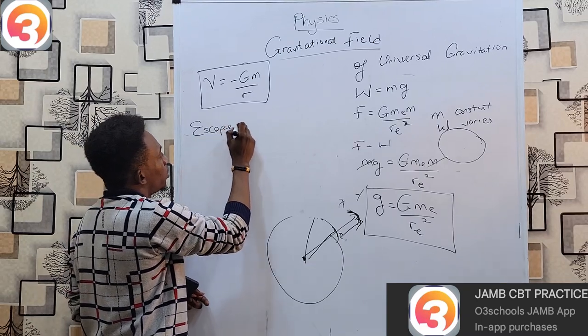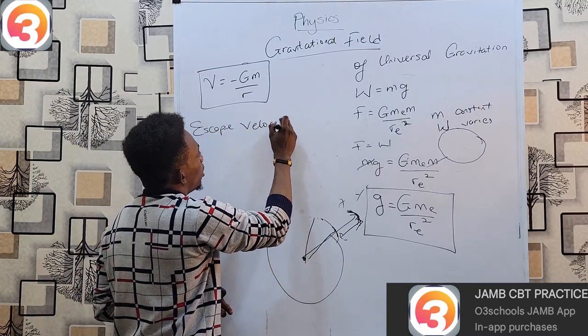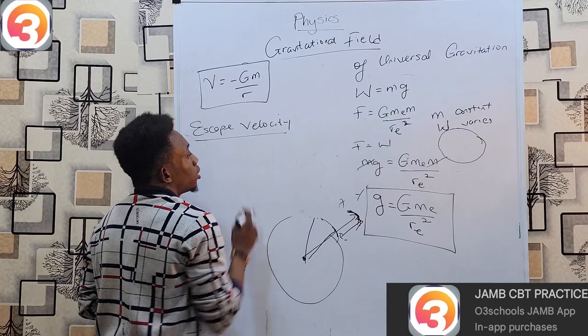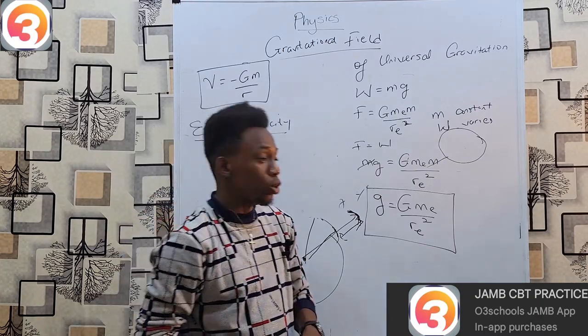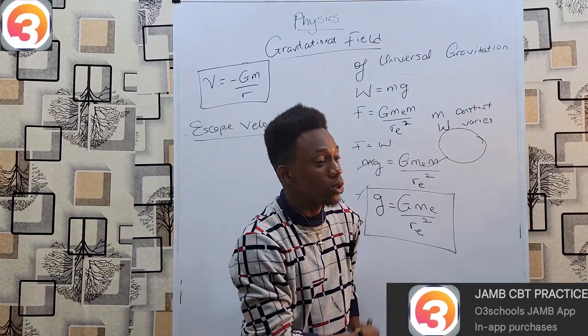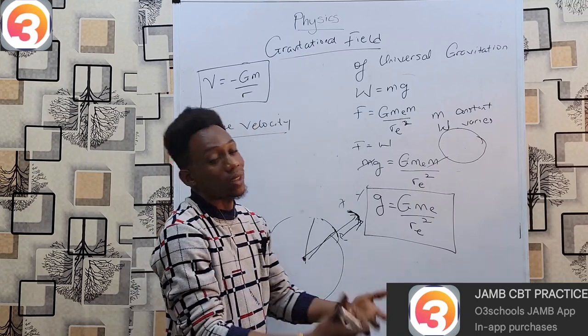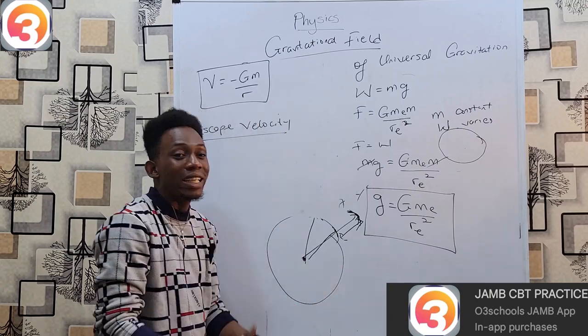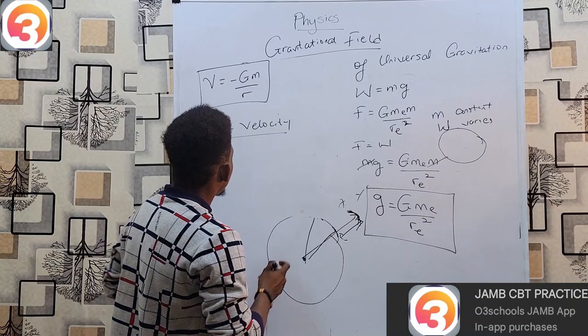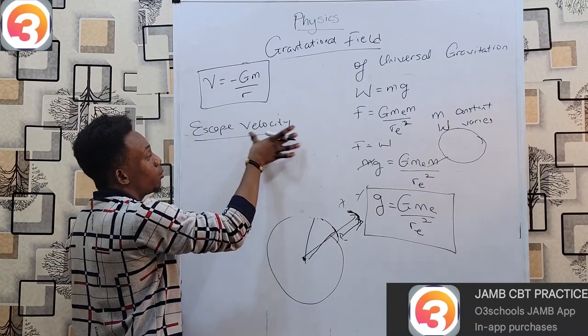One more key thing to note is something very important known as escape velocity. To launch rockets into space, you have to do it in such a way that these rockets do not automatically fall back to earth once they get launched. They have to be able to maintain their orbits and as such they have to be launched at what we call escape velocity.